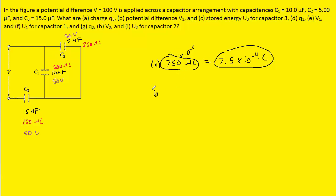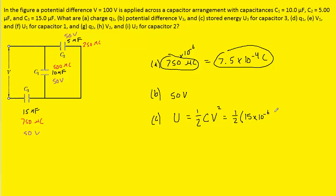Part B asks for the potential difference across capacitor 3, which is just 50 volts. For part C, the stored energy requires using one half times C times V squared. Plugging in C3 = 15 microfarads (converted to farads as 15 × 10⁻⁶) and V = 50 volts squared, we get 1.88 × 10⁻² joules. That's the correct answer to part C.